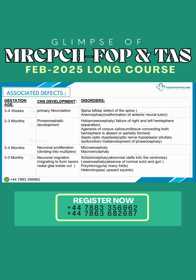Septo-optic dysplasia is a condition involving optic nerve hypoplasia, pituitary dysfunction, and maldevelopment of the prosencephalon. At three to four months, neuronal proliferation occurs — cells dividing into multiples. Defects here cause either macrocephaly from too much proliferation, or microcephaly from decreased proliferation.